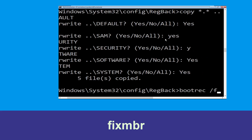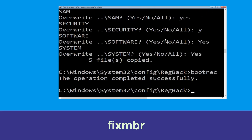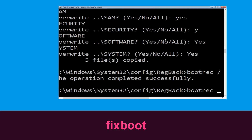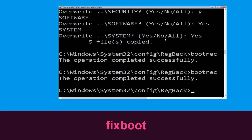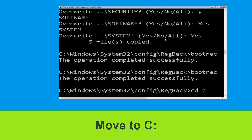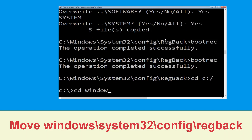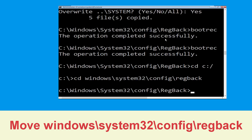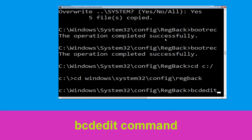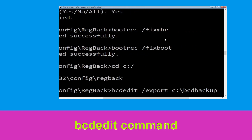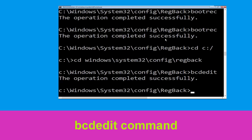Type cd c:\ and hit Enter. Now type cd windows\system32\config\regback and hit Enter. Then type bcdedit /export c:\bcd_backup and hit Enter to execute this command.